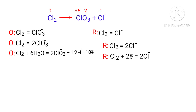Make electron gain equivalent to the electrons lost. The electrons lost in the oxidation half-reaction must equal the electrons gained in the reduction half-reaction. In the oxidation half-reaction there are 10 electrons, but in the reduction half-reaction there are only 2 electrons. To balance the number of electrons in the two half-reactions, multiply the reduction half-reaction by a coefficient of 5.